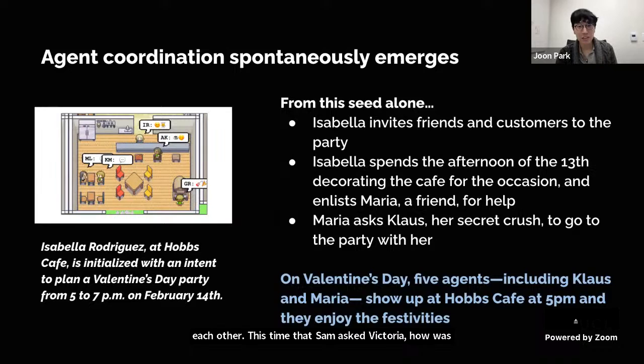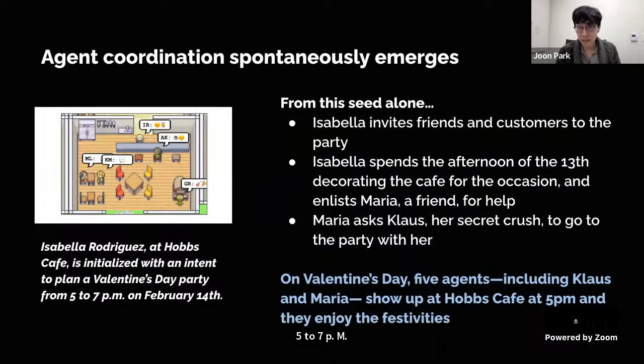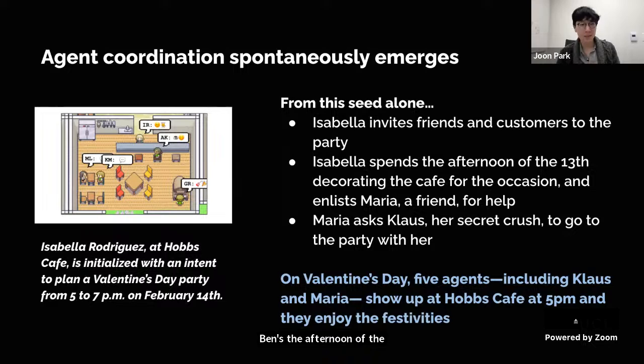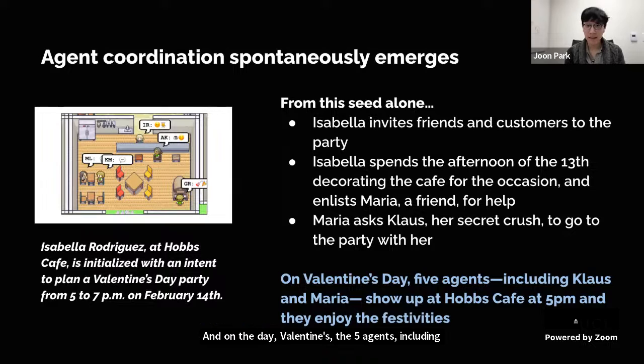Agent coordination also spontaneously emerges. We set the starting date to February 13th and seeded Isabella — the owner of Hobbs Cafe — with an intent to plan a Valentine's Day party from 5 to 7 p.m. on February 14th. From that seed alone, Isabella invites friends and customers, decorates the cafe on the 13th, and enlists Maria for help. Maria then asks Klaus — her secret crush — to go with her. On Valentine's Day, five agents including Maria and Klaus actually show up at Hobbs Cafe at 5 p.m. and enjoy the festivities.